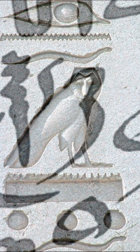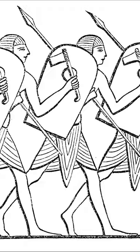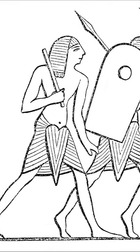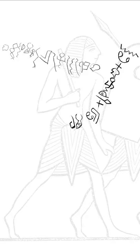Egyptians developed simplified symbols to write on papyrus. Semitic language speakers who were enslaved by the Egyptians or hired to fight in the Egyptian army used 24 of these symbols to write their language using just consonants.